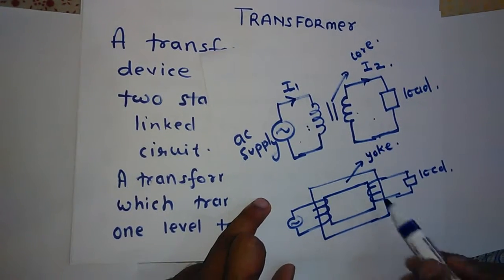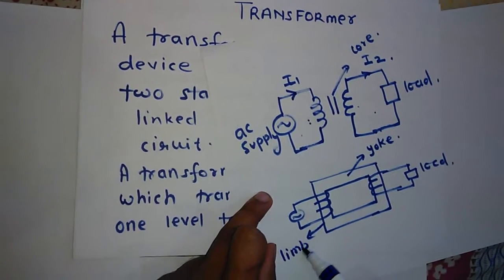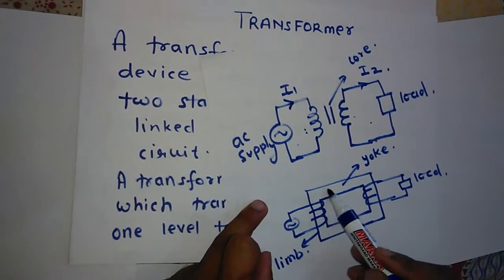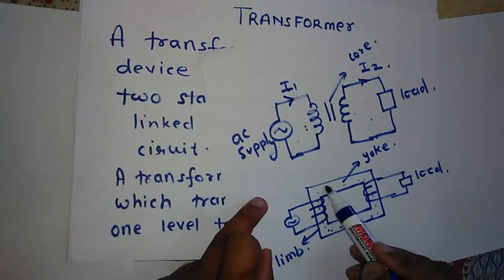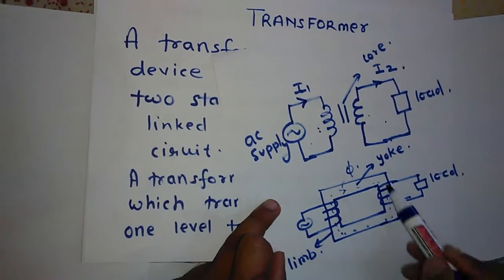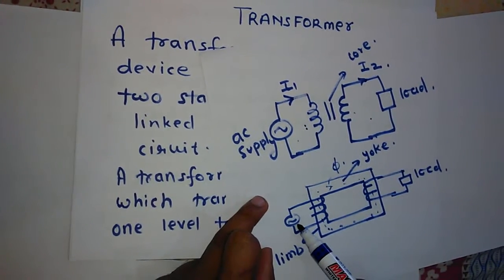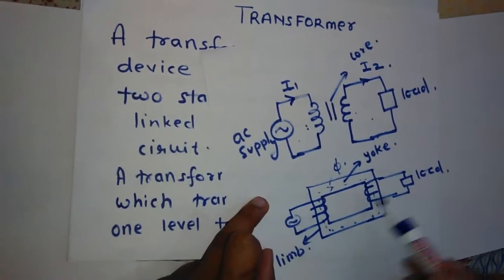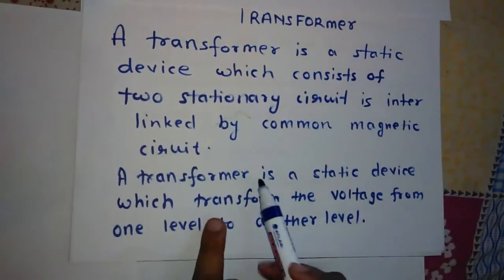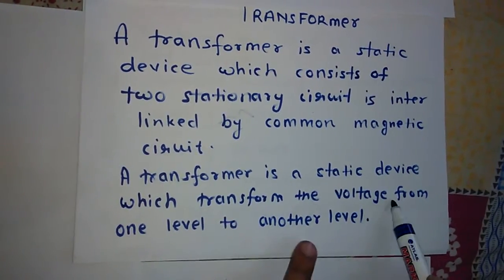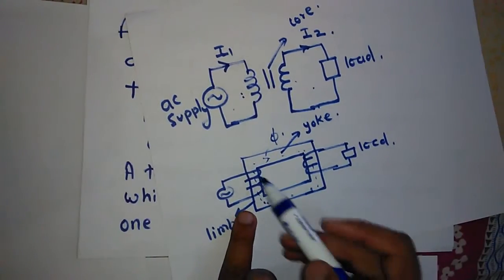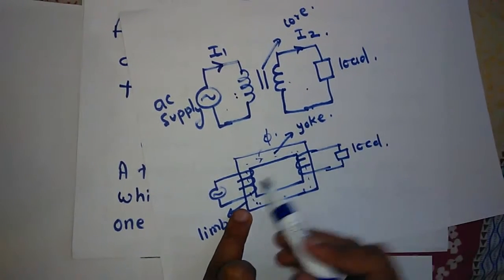The vertical portions of the core are called limbs. A transformer has two limbs and two yokes, forming the complete magnetic path where the flux is produced. This is the transformer having a common magnetic circuit, with one electrical circuit on the primary side and one electrical circuit on the secondary or load side. So a transformer is a static device which transforms the voltage from one level to another level.